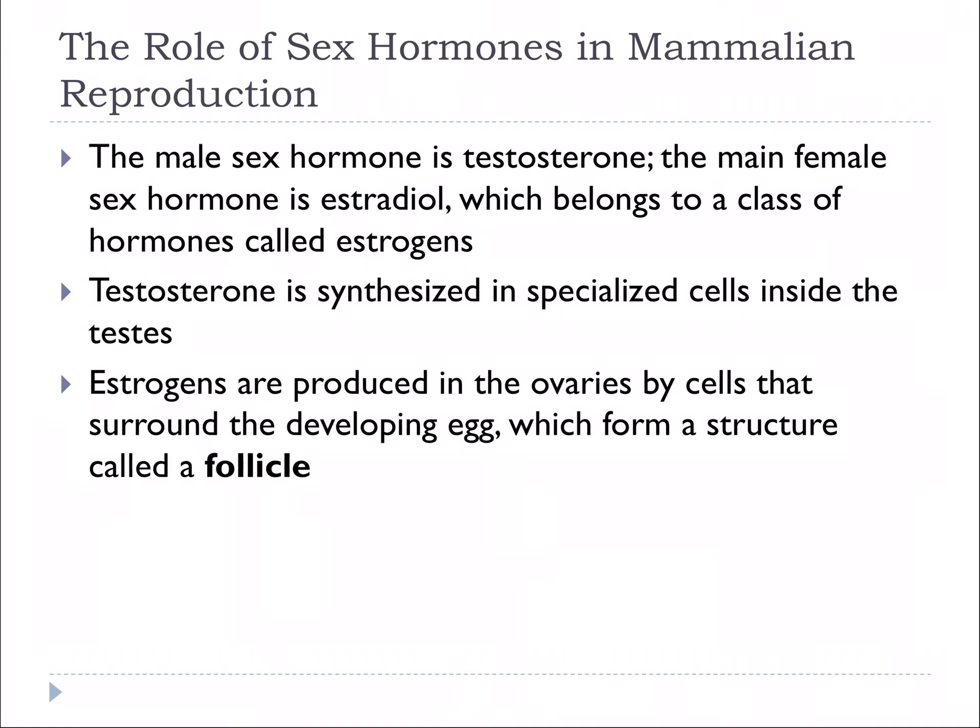Sex hormones play a very important role in mammalian reproduction. The male sex hormone is testosterone. The female sex hormone is estradiol, which belongs to a class of hormones collectively known as estrogens. Testosterone is synthesized in specialized cells in the testis, and estrogen is produced in the ovaries by the cells that surround a developing egg, which form a structure called a follicle. When that follicle breaks down, it releases a lot of hormones.